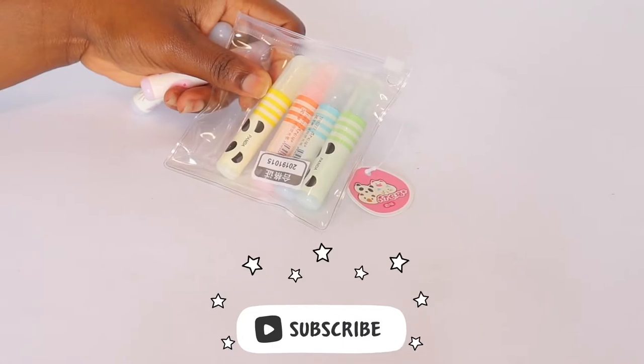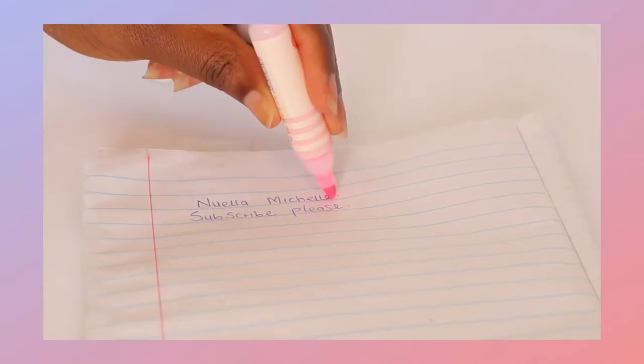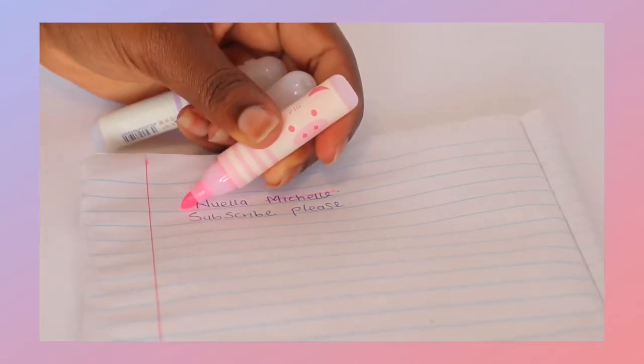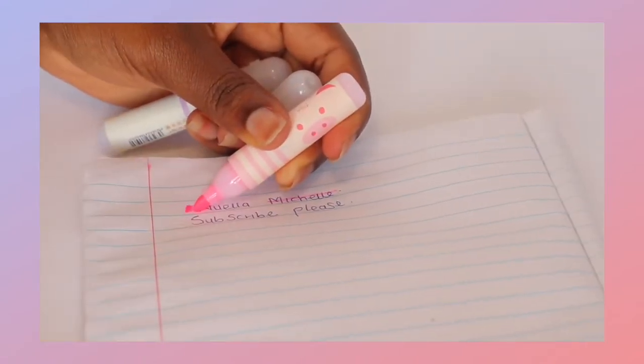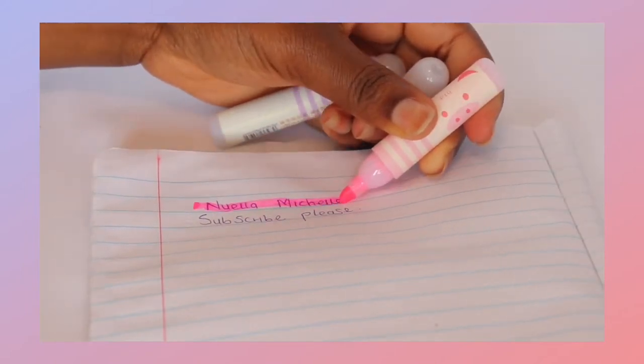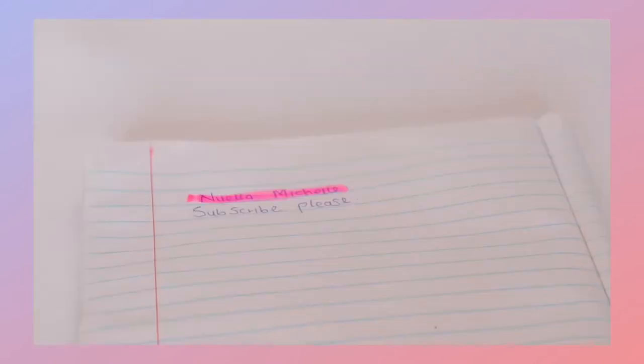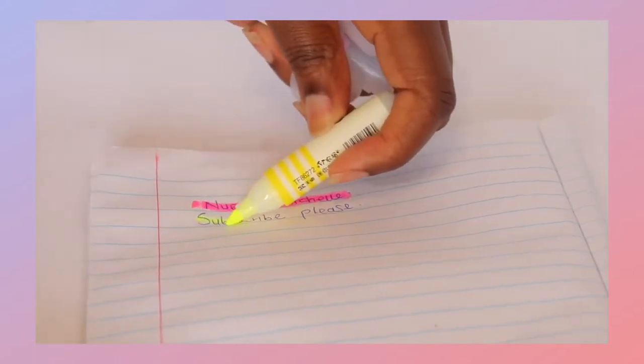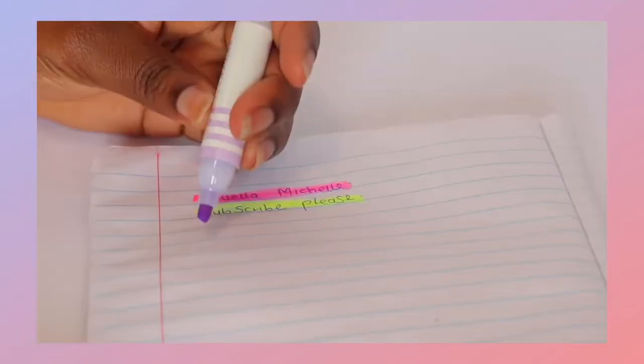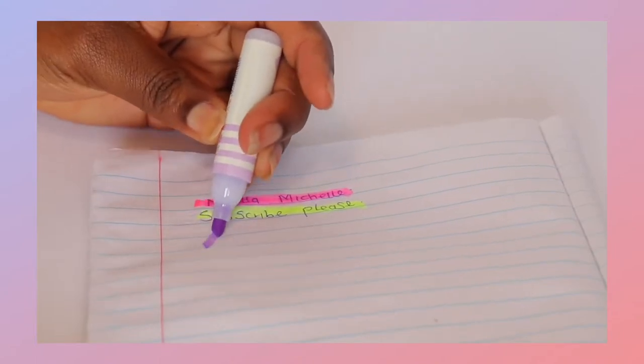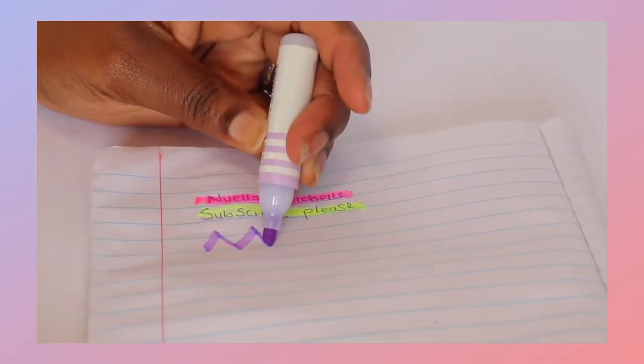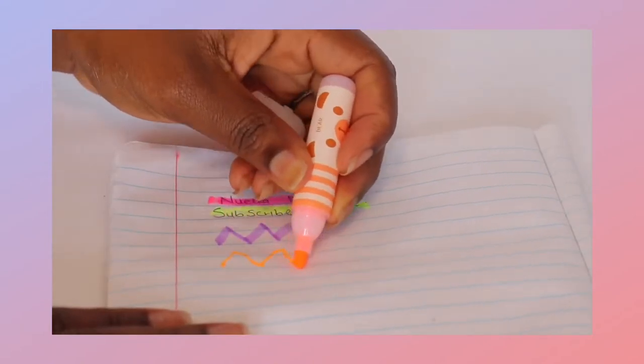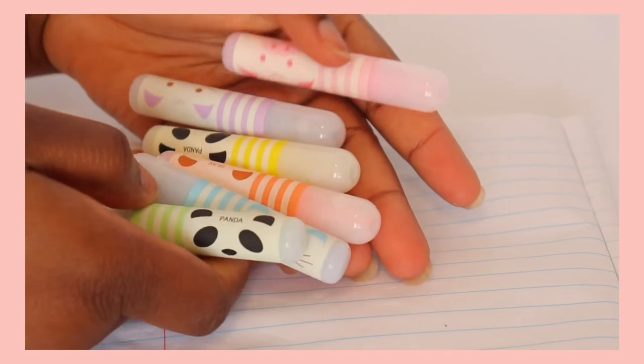I'm going to show you guys how these highlighters write. Actually I'm not doing justice to this highlighter because I'm using my left hand so that you guys can see how it writes. If I use my right hand, my hand will block the camera. So this is how the yellow highlighter looks like. I also decided to show you guys how the purple highlighter looks like.